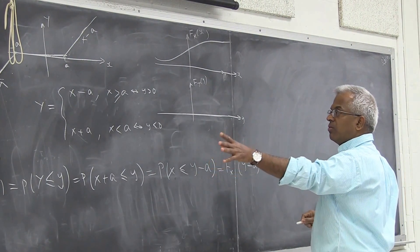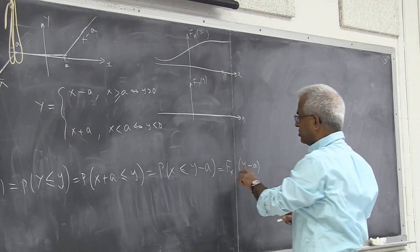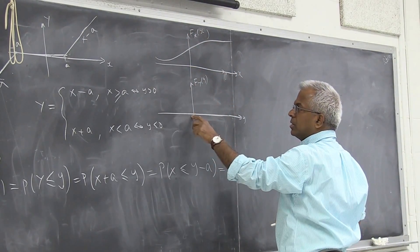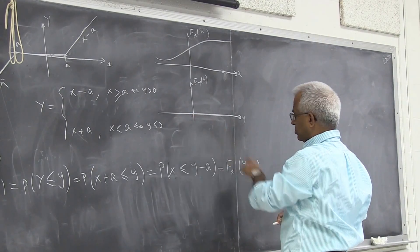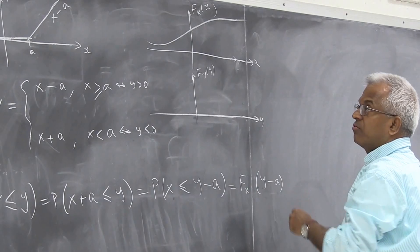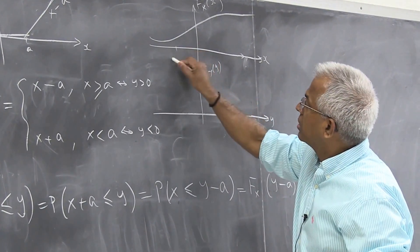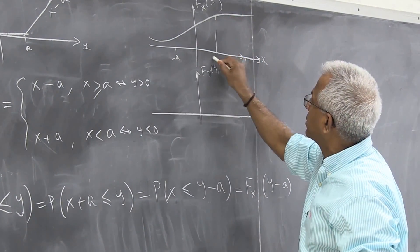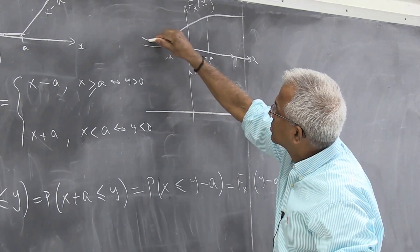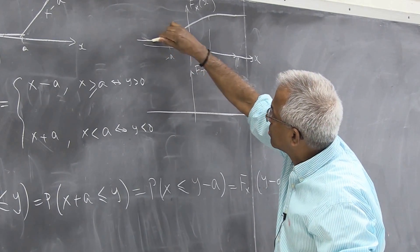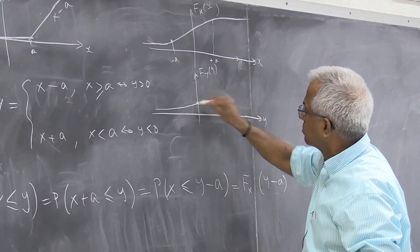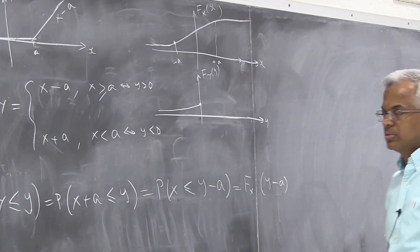If we draw F_X(x) and want to draw F_Y(y): for y negative, F_Y(y) = F_X(y - a). Taking y very close to 0 from the negative side, this is approximately F_X(-a). So this curve comes and sits at the value corresponding to F_X(-a).